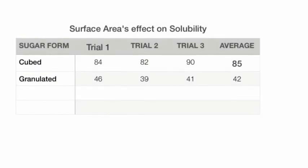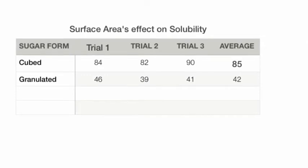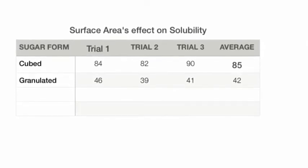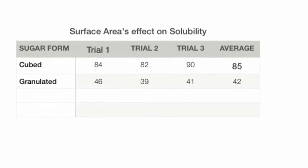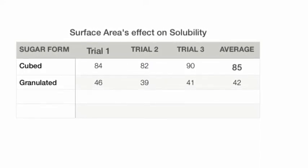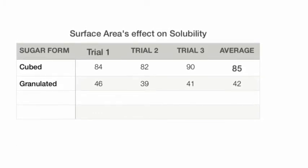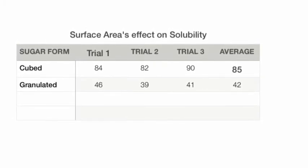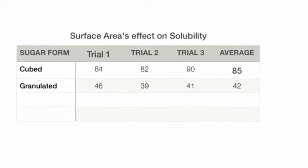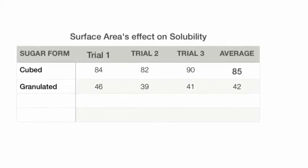In this experiment, we did three trials to test surface area's effect on solubility. The two sugar forms we used were cubed and granulated. The cubed sugar had a small surface area and the granulated had a large surface area. At the end, we took an average and got 85 seconds and 42 seconds for the cubed and granulated sugar dissolving time respectively. We used this to draw conclusions on our experiment.